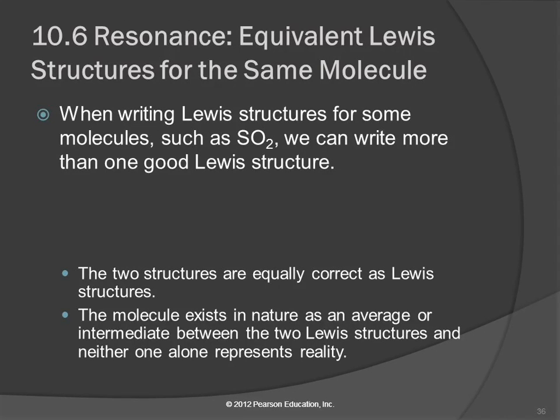Let's write a Lewis structure for sulfur dioxide, SO₂. In doing a skeleton for this, we've got two oxygens and one sulfur, so it's probably a good idea to put the sulfur in the middle and an oxygen on each side.